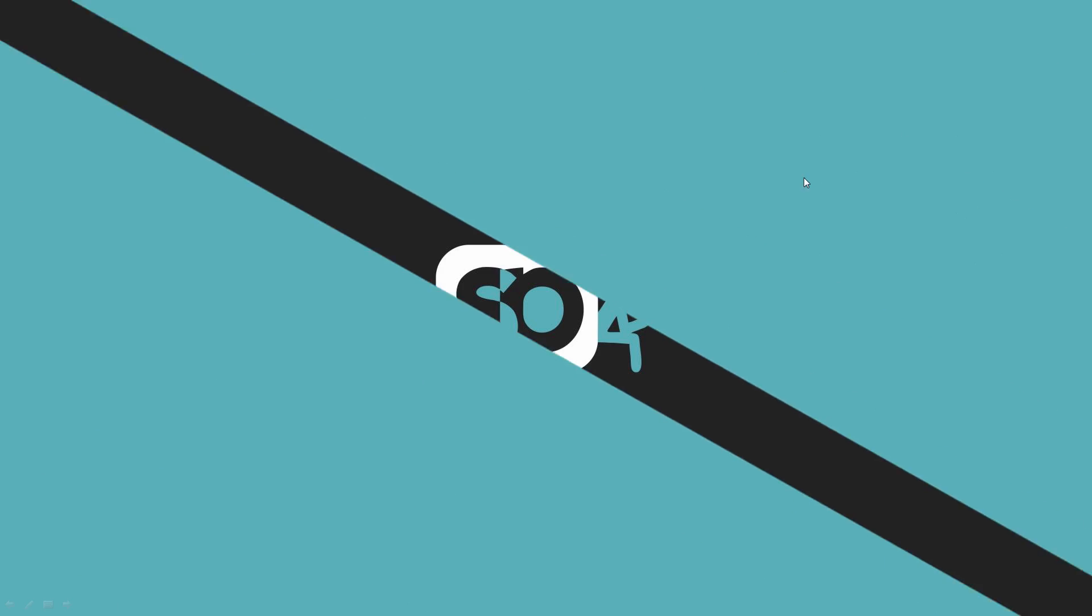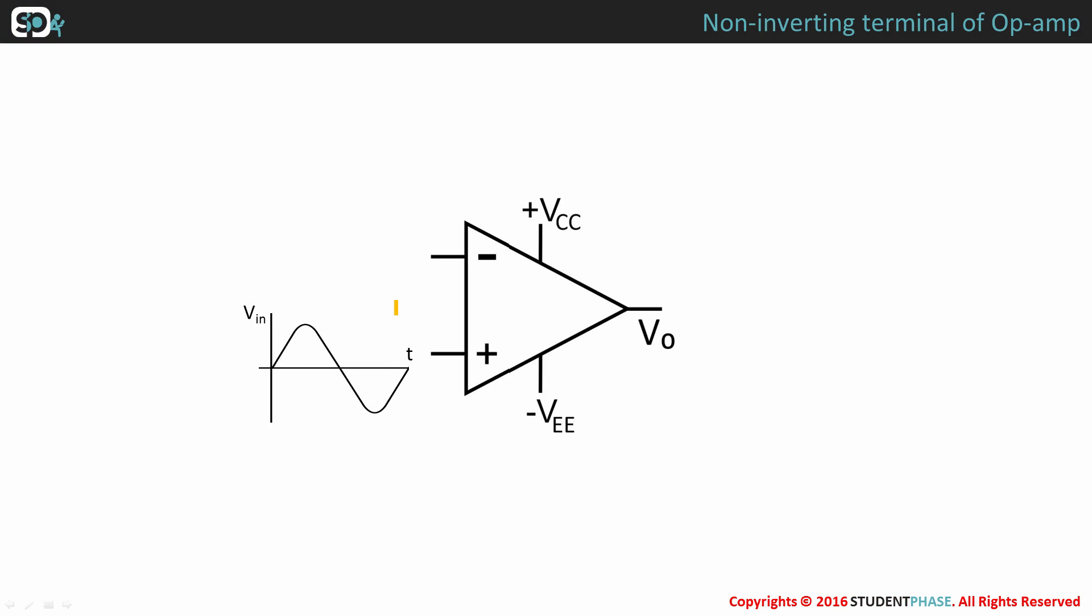When input signal is applied at the non-inverting terminal and the inverting terminal is grounded, the output of an op-amp is in phase with respect to input.